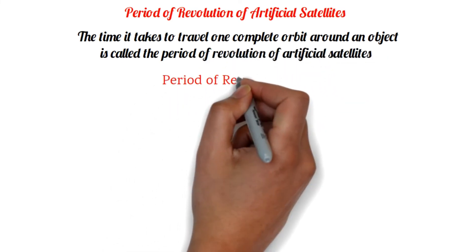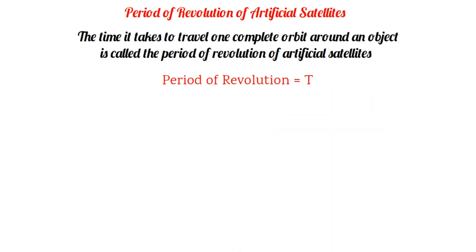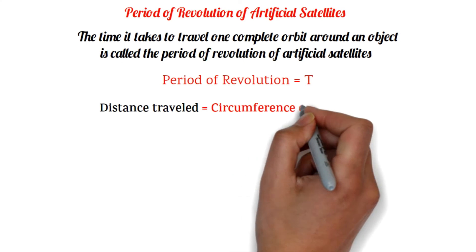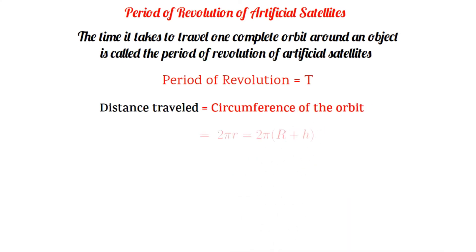If the period of revolution of the satellite is T, the distance traveled by the satellite in this time equals the circumference of the orbit, which is 2π into small r, or 2π into capital R plus small h. Therefore, capital T equals 2π into capital R plus small h by v.